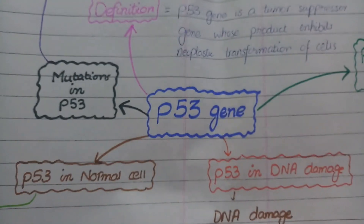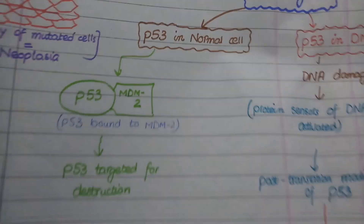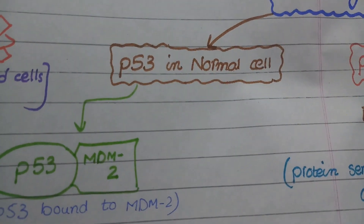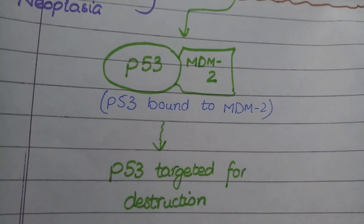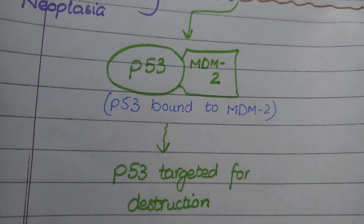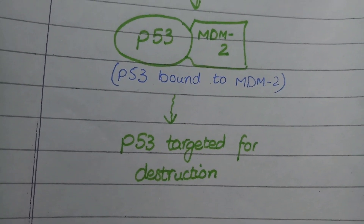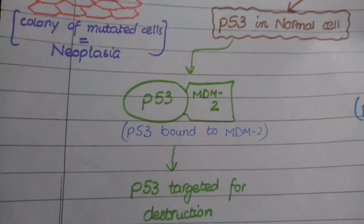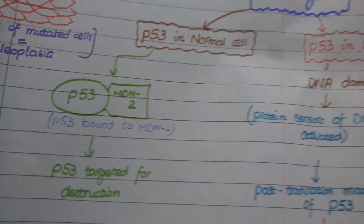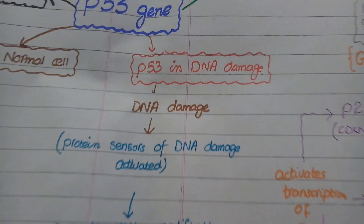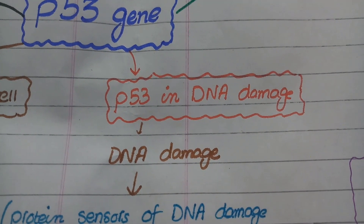Now we will see the detailed mechanisms and pathway of p53. In normal cells where there is no DNA damage, the p53 protein is bound to a protein called MDM2. This MDM2 protein targets p53 for destruction, so p53 has nothing to do in cells where there is no DNA damage.